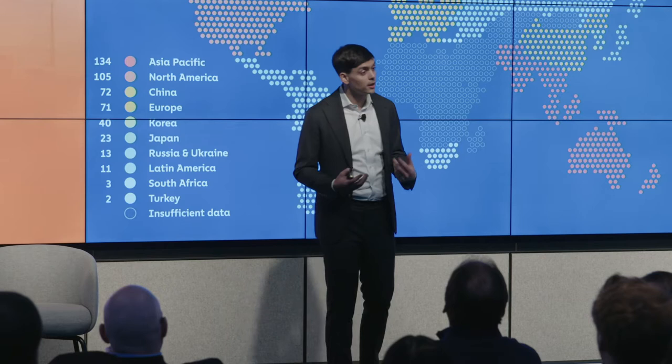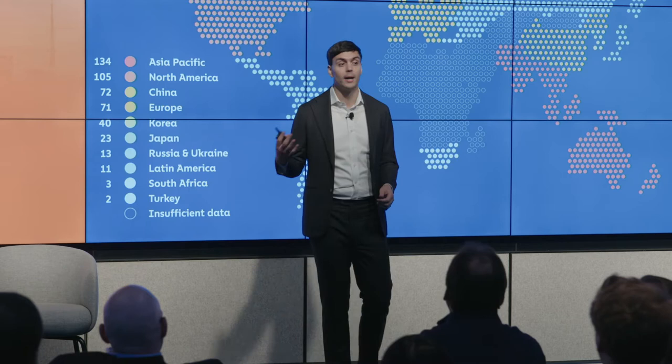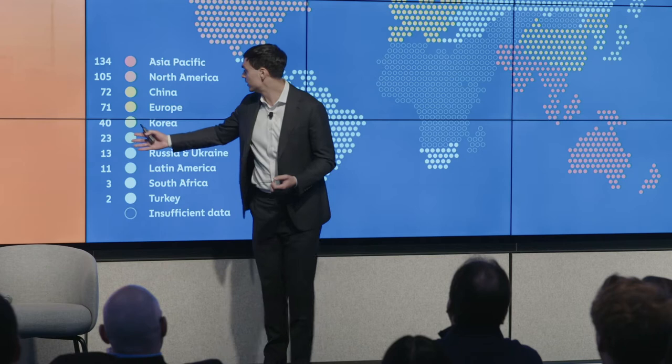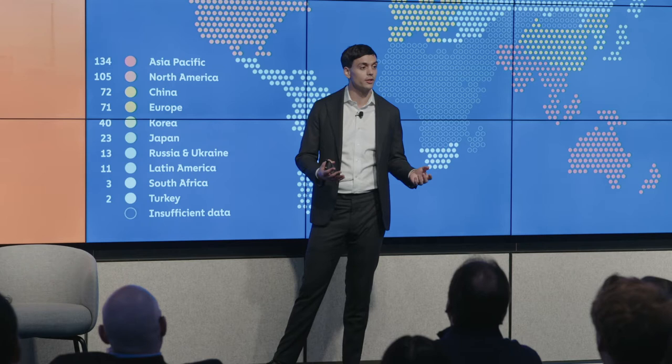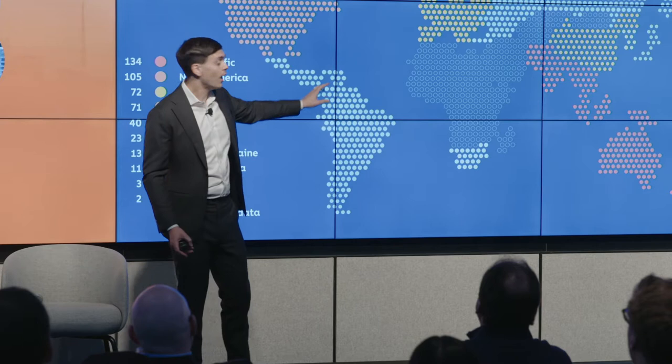What surprised me was that Korea actually seemed to have more Bitcoin coming out of it than Japan did. Those markets are always in quite close rivalry, but it's really interesting to see Korea has about $40 billion worth of Bitcoin being sent from that region versus $23 billion in Japan. But it's not all about Asia — there is, of course, a lot of activity in North America and in Europe.